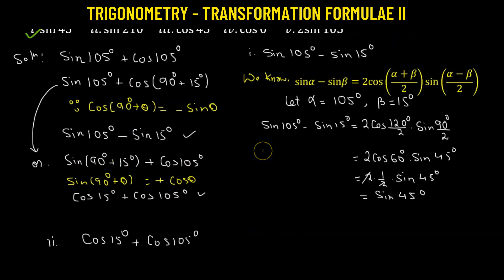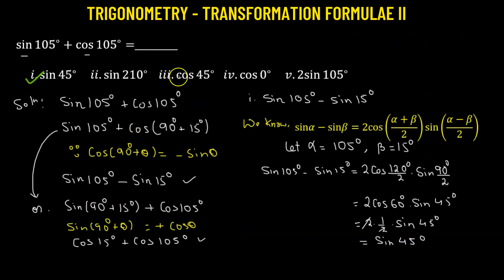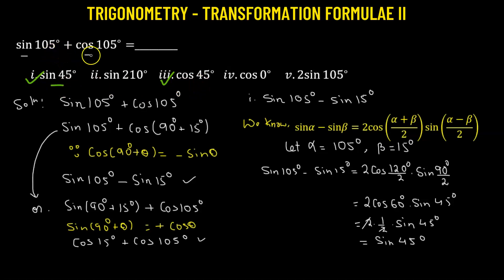Going back to the options, option three is cosine 45 degrees, so this is also correct. We have two equivalent values for sine 105 degrees plus cosine 105 degrees: one is sine 45 degrees and the other is cosine 45 degrees.